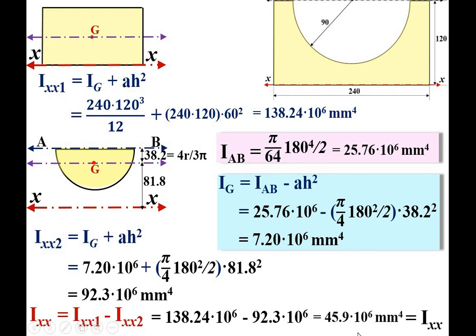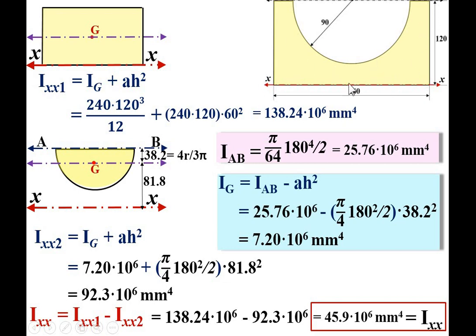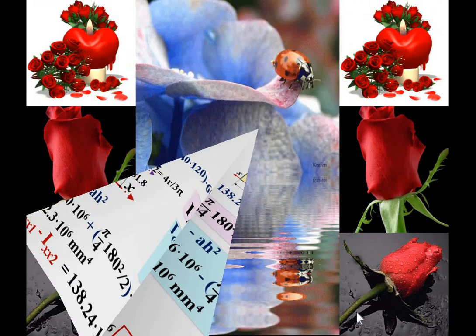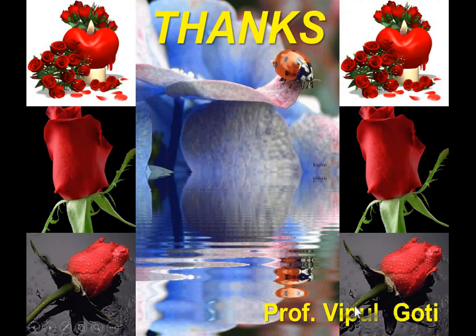So I_XX = 45.9×10⁶ mm⁴ — this is your final answer, the moment of inertia of the shaded area about the XX axis. Thanks, my dear friends.